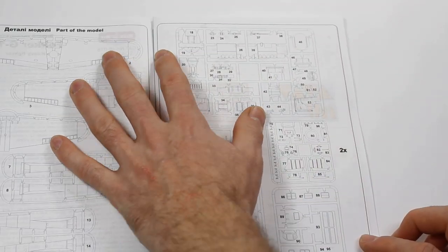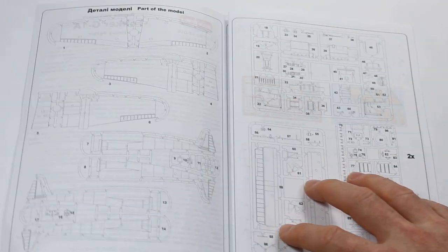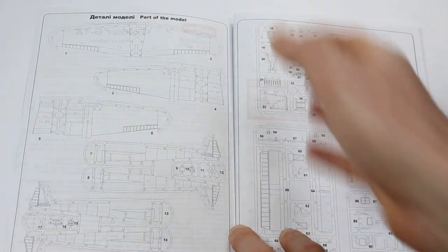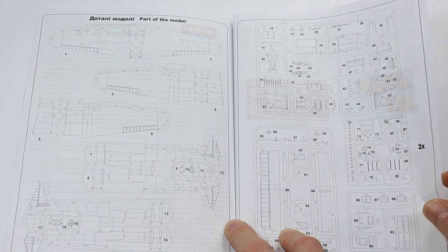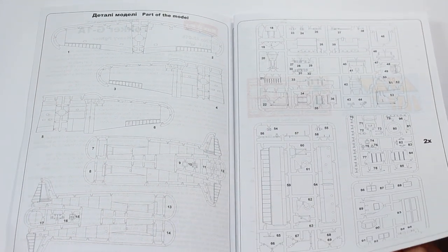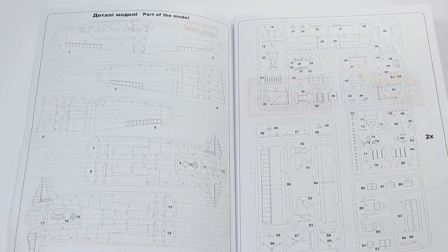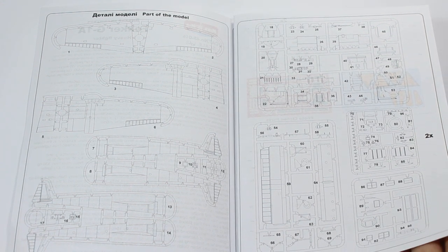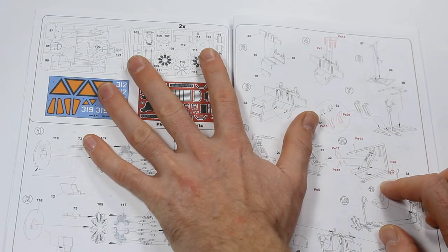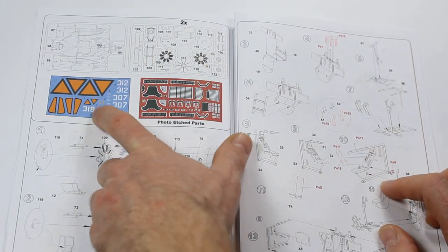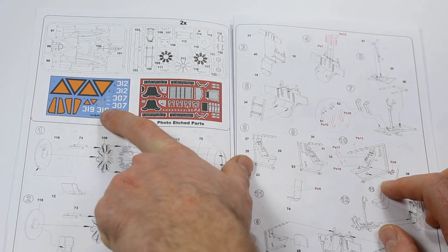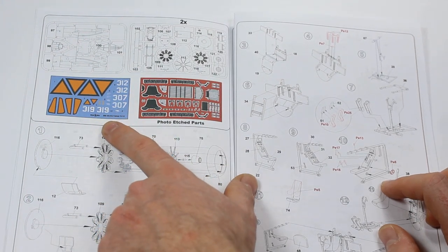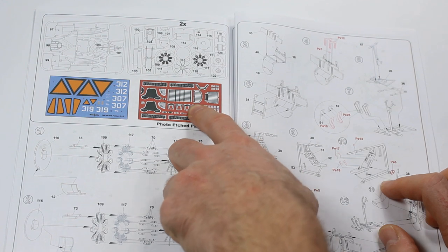Starting off, we've got parts breakdown here which shows you all of your different sprues, and they are numbered. I would imagine that's where you're going to refer to the numbering because they're not going to have numbers on the sprues. We've also got a nice decal sheet here with the large orange triangles, which is the Dutch national insignia, and we've got a photo etch set there as well.